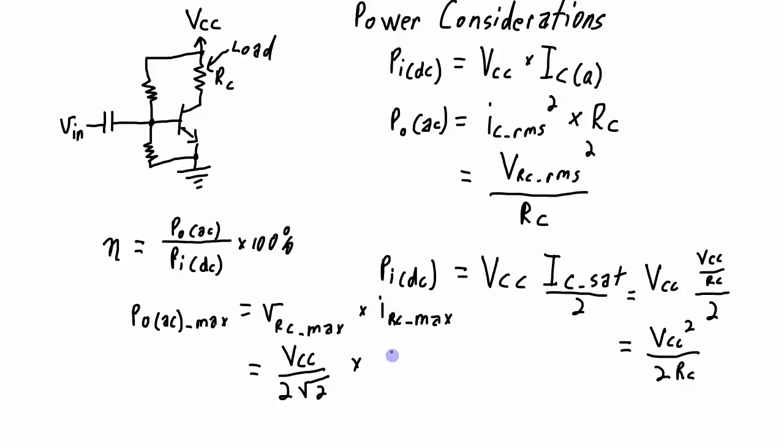I'm going to rewrite this RC as the RC max is the saturation current, which is going to be VCC over RC. That's the peak to peak max. So I'll divide by 2 to give me the peak max, and divide by the square root of 2 to give me the RMS max. Multiplying all of this out, I get VCC squared over 8 RC.